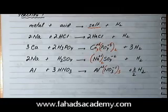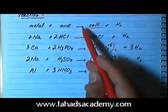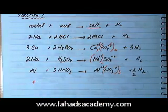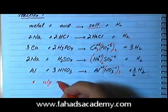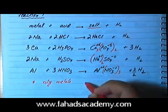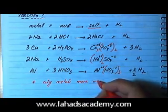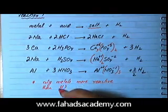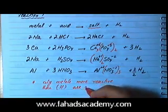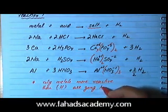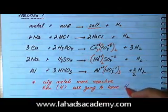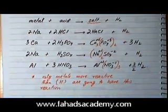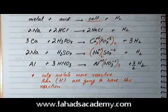There is one important point when reacting metals with acid to produce salt and hydrogen: only metals that are more reactive than hydrogen will undergo this reaction.